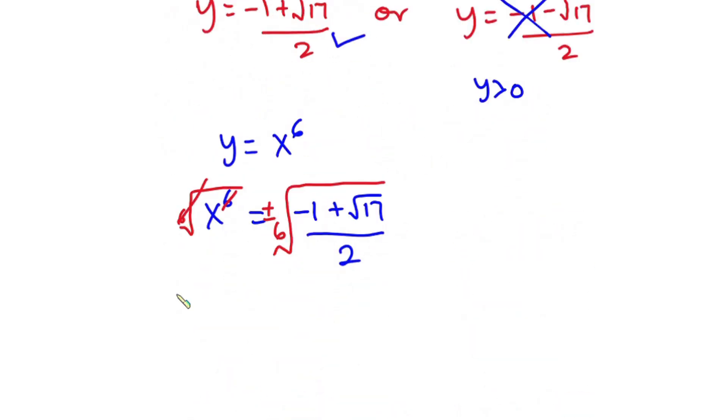Now straight away this 6th will cancel this 6th root. Now we have x is equal to plus or minus 6th root of negative 1 plus square root of 17 over 2.